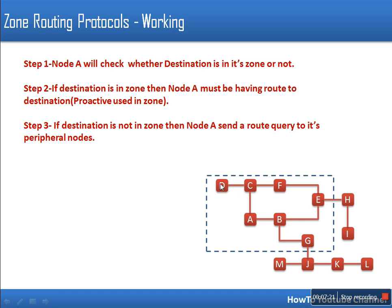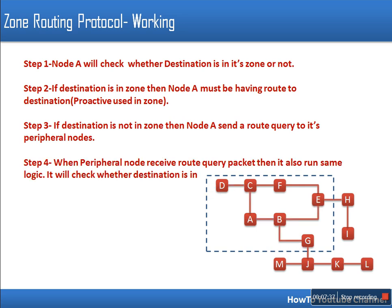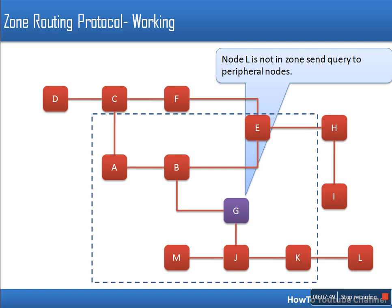Instead of broadcasting the route query packet to all nodes, node A sends it only to its peripheral nodes — the nodes with distance equal to zone radius 2, which are nodes D, G, and E. When these peripheral nodes receive the route query packet, they run the same logic: they check whether the destination node L is in their zone or not.